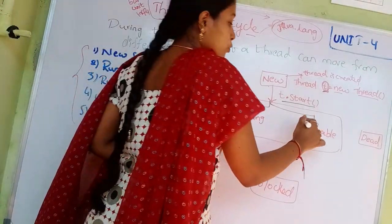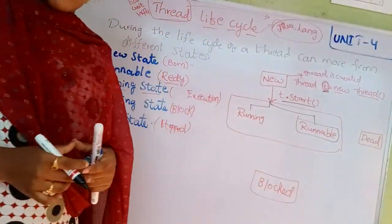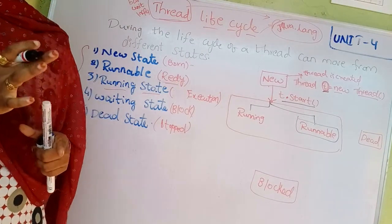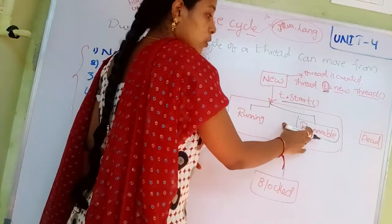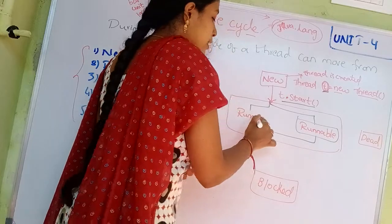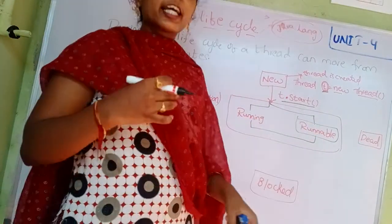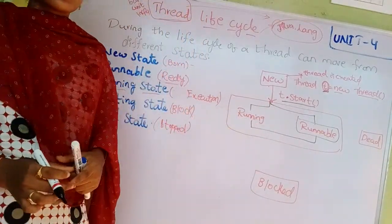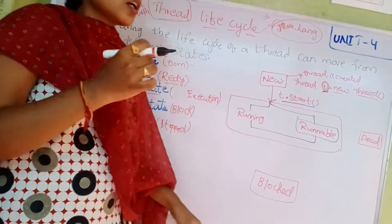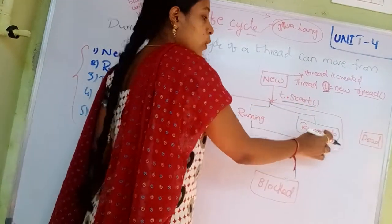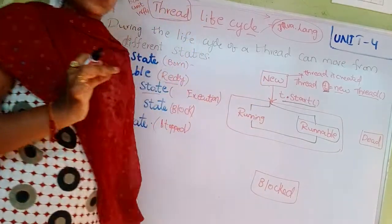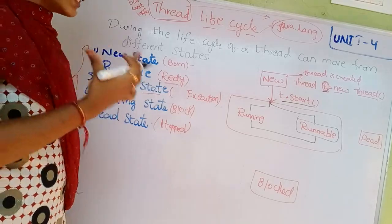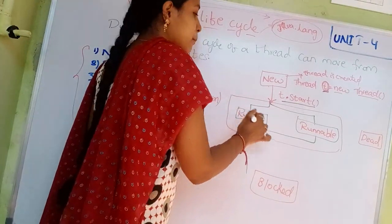If the thread goes to the runnable state, it means the thread is ready for execution but waiting for the processor. When the thread is in runnable state, the run() method will be called implicitly. So whenever the thread is ready for execution, the run() method is called automatically and implicitly.